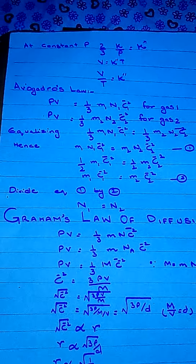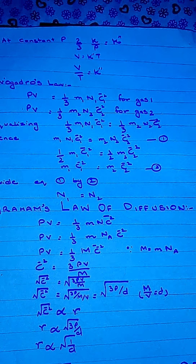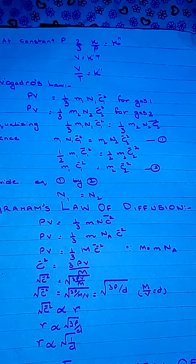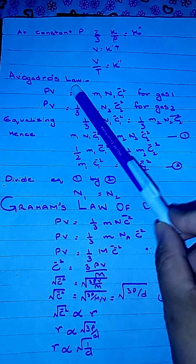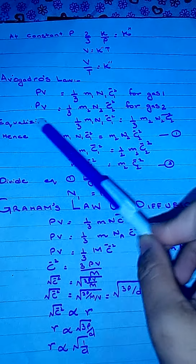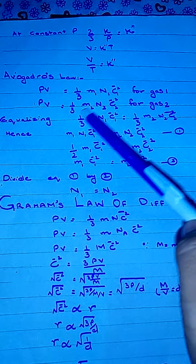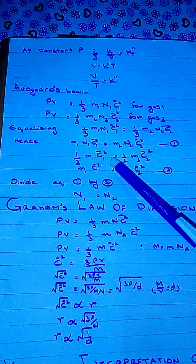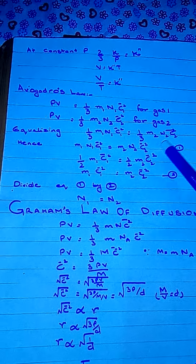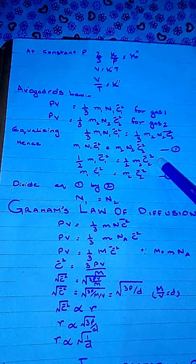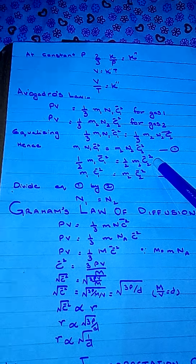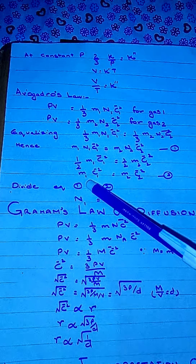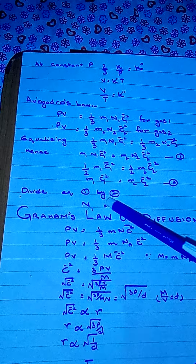To derive Avogadro's law, consider two gases at the same pressure and volume V. Their number of molecules are N1 and N2, masses of molecules are m1 and m2, and mean square velocities are C̄1² and C̄2². Applying the kinetic equation to each: PV = (1/3)m1·N1·C̄1² and PV = (1/3)m2·N2·C̄2². Equating them gives m1·N1·C̄1² = m2·N2·C̄2². Since temperatures are equal, the mean kinetic energy per molecule is the same: (1/2)m1·C̄1² = (1/2)m2·C̄2², so m1·C̄1² = m2·C̄2². Dividing the first result by the second gives N1 = N2.